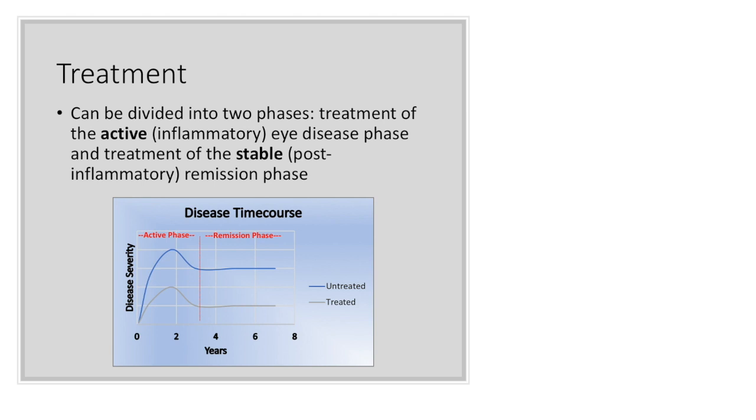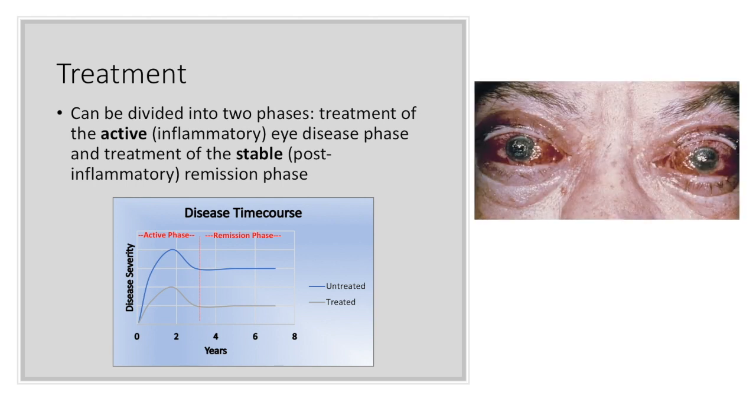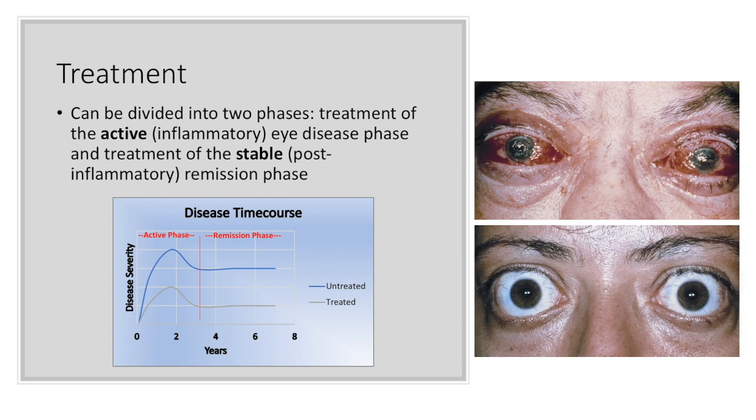Treatment during this time should focus on preserving sight and the integrity of the cornea, as well as providing treatment for double vision when it interferes with daily functioning and becomes bothersome. Treatment during the remission phase that lasts indefinitely in most cases involves correcting unacceptable permanent changes that persist after the ocular conditions of the active phase have stabilized. This image illustrates the symptom severity possible during the active phase. And this image illustrates the appearance of the stable phase with some lid retraction or possibly mild proptosis.